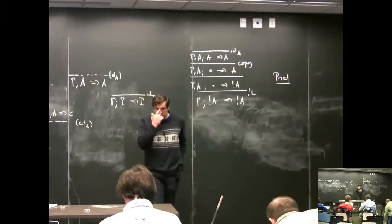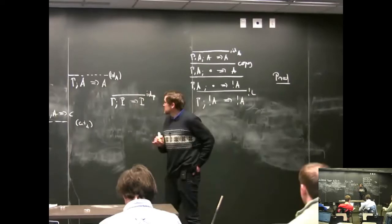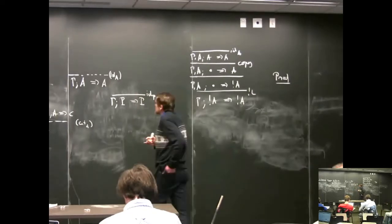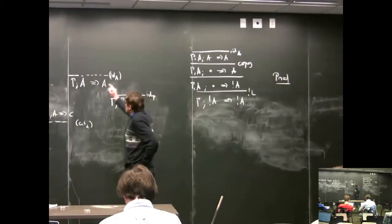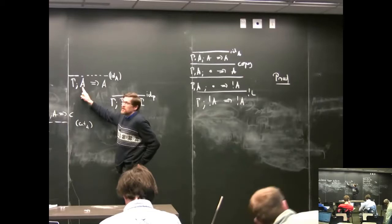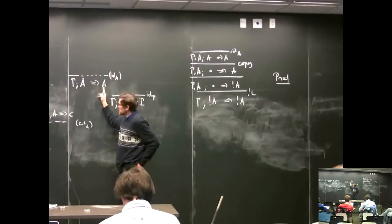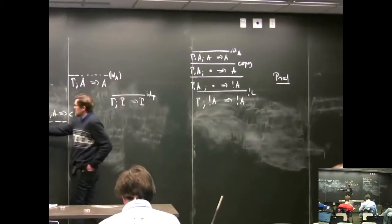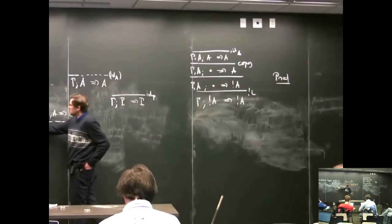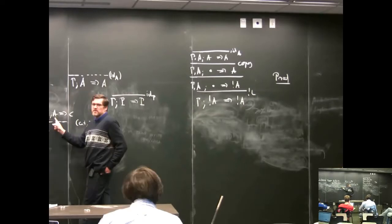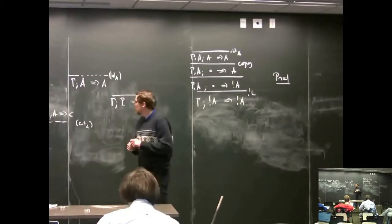The identity theorem says that if you can use A, then you can prove A as a goal. And the cut theorem says that if you can prove A as a goal, then you're allowed to assume it. So they go in the two directions between uses and goals.